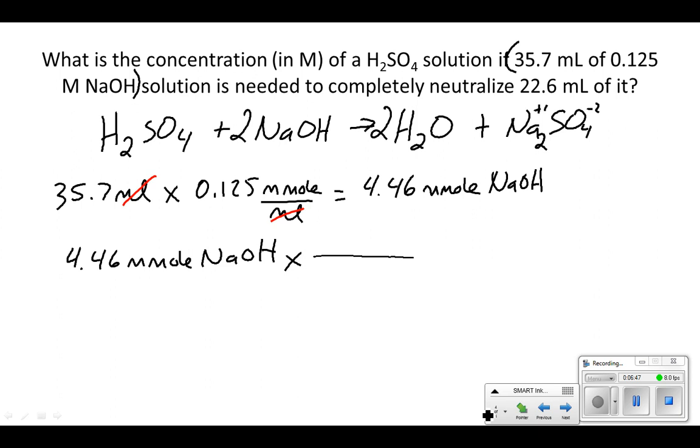We take 4.46 millimoles of NaOH. There's the mole ratio. NaOH is going to go on the bottom - the number here is 2, so 2 millimoles of NaOH. On the top goes what we're trying to find, which is H2SO4. There's a 1 in front of that, so 1 millimole of H2SO4. When I do that math, the units are going to cancel out. This is just division by 2, which will give me 2.23 millimoles of H2SO4.